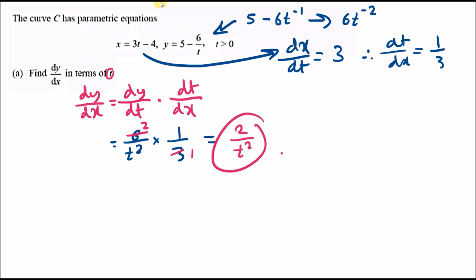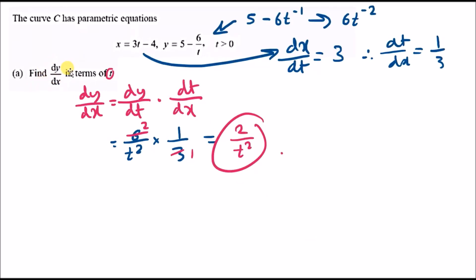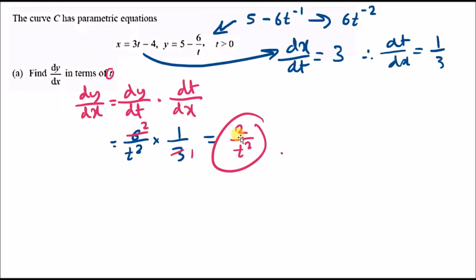Let's move on. Part b: the point P lies on C where t equals half. Find the equation of the tangent to C at the point P. First things first, we're talking about a typical straight line equation, so y equals mx plus c will do, where m is your gradient.